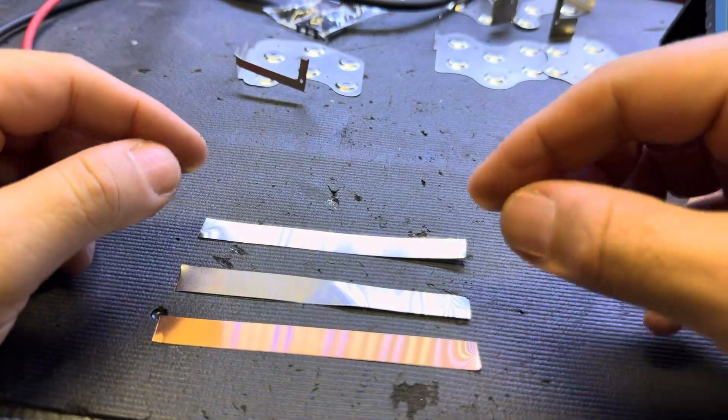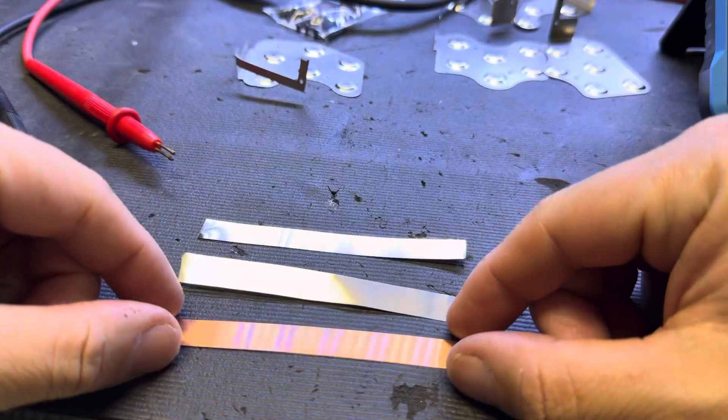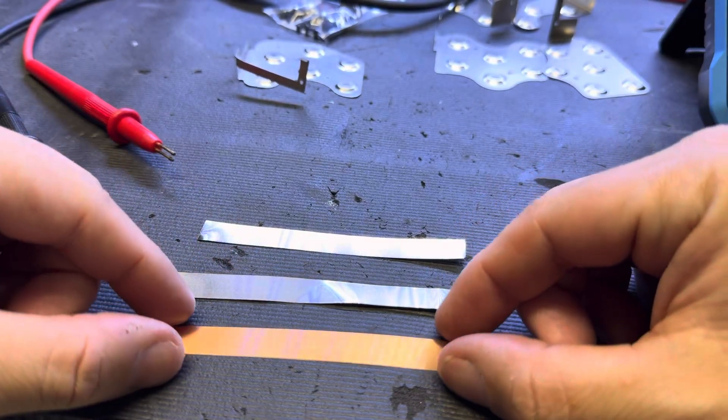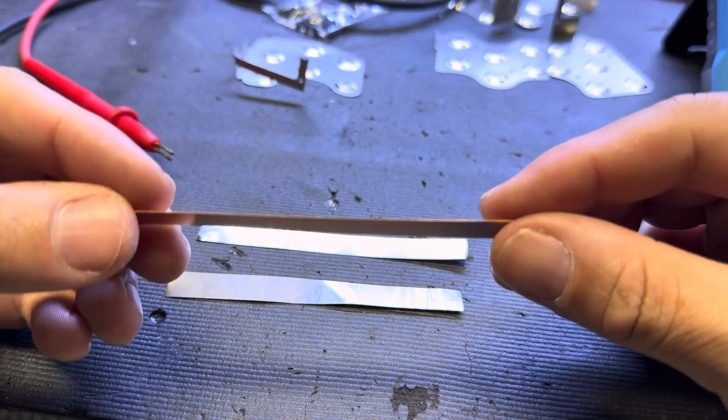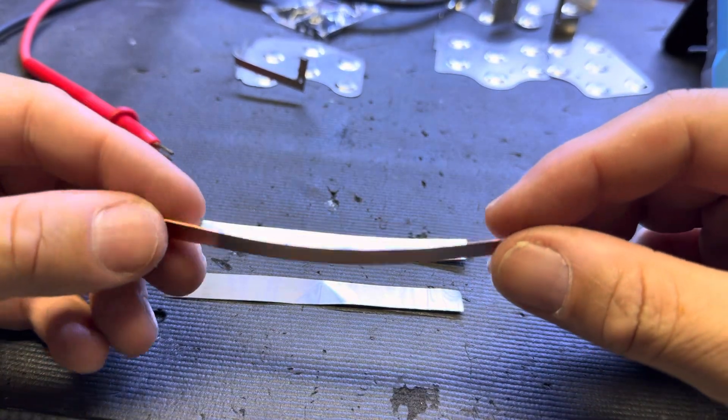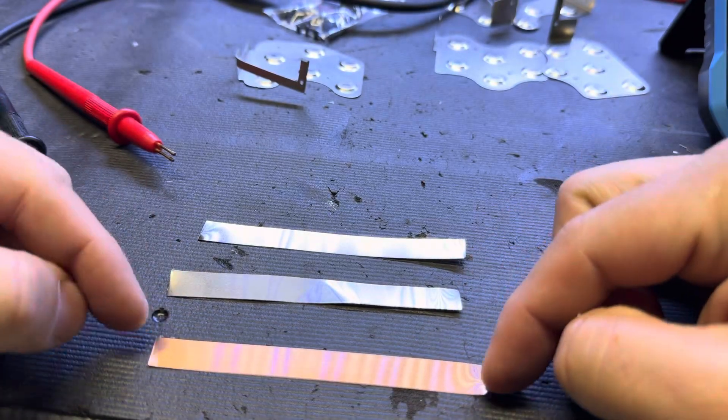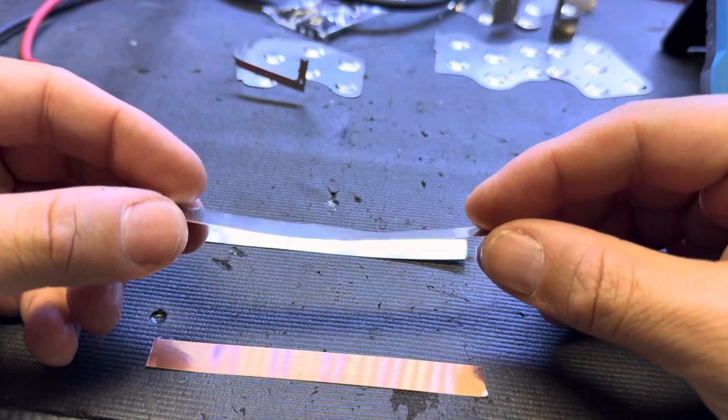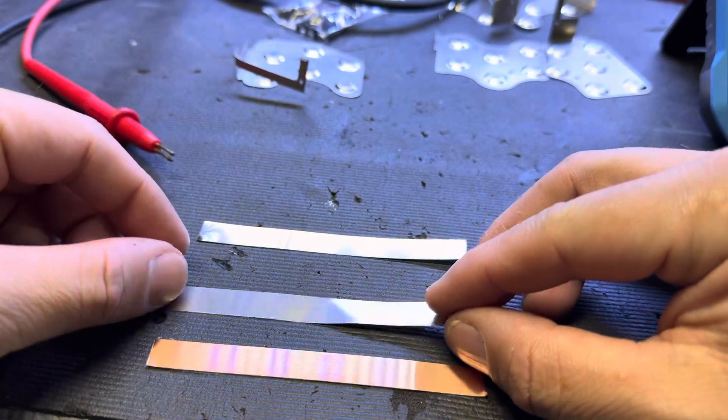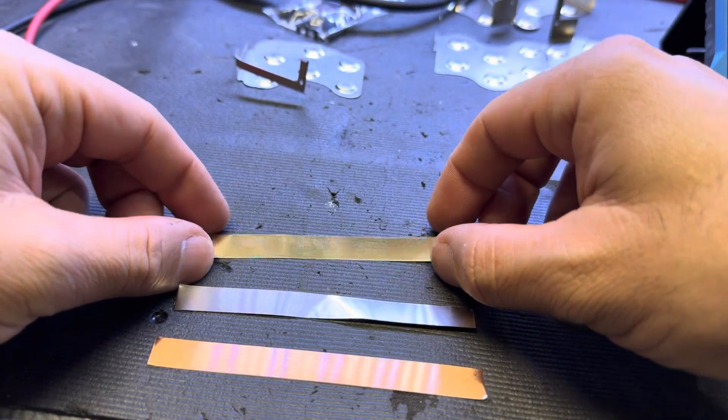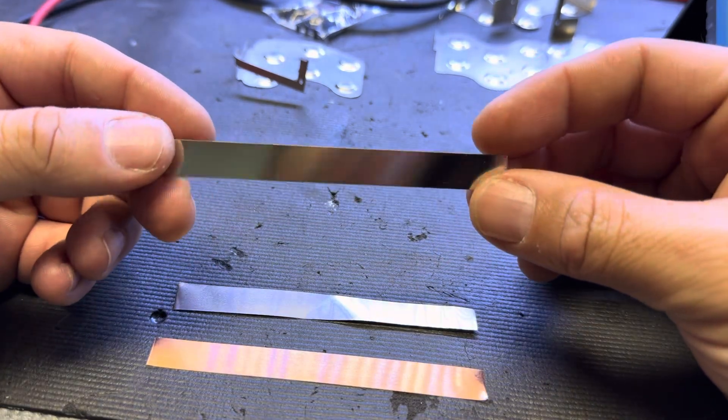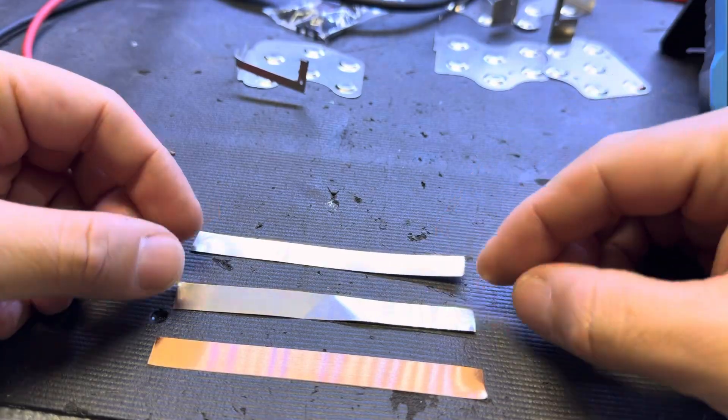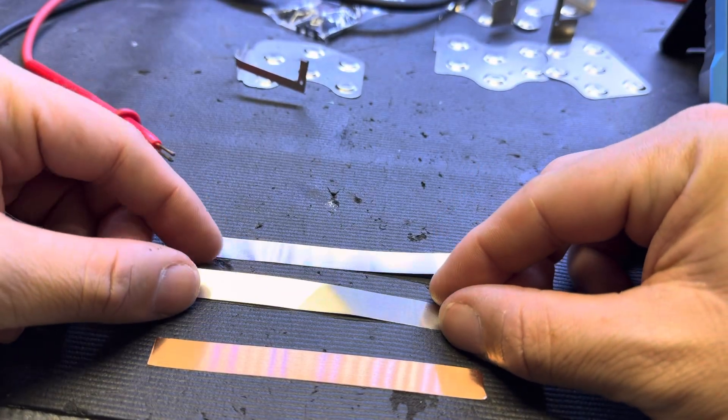Now the interesting part - how do we identify our metals? I've got three pieces of metal here. This one is copper, 0.1 by 10. This one is pure nickel, same 0.1 by 10. And this one is nickel steel, 0.1 by 10. Same thickness, all of them.